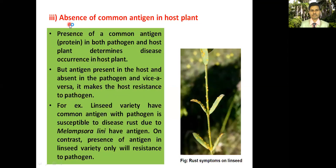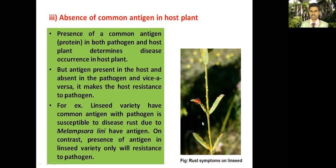Absence of common antigen in the host: the presence of common antigens in both pathogen and host plant determines disease occurrence. Antigens present in the host but absent in the pathogen, and vice versa, make the host resistant to the pathogen. For example, a linseed variety that shares common antigens with the pathogen Melampsora lini is susceptible to rust disease.